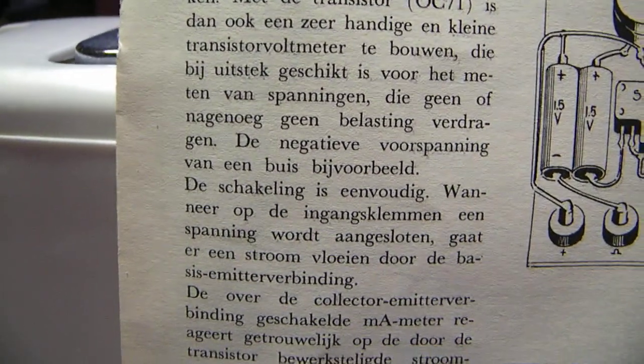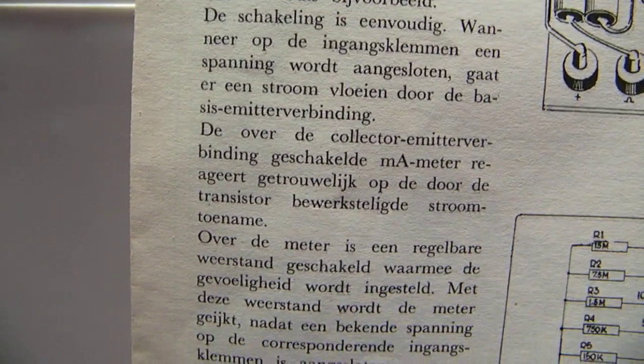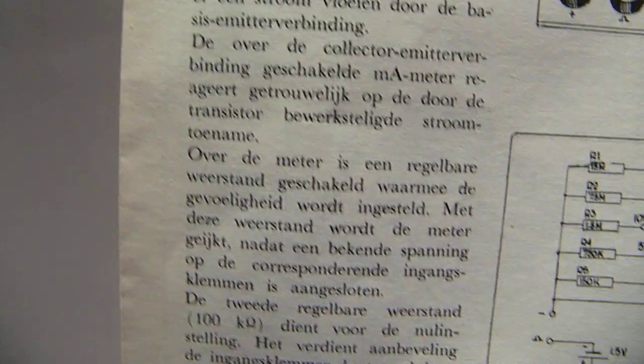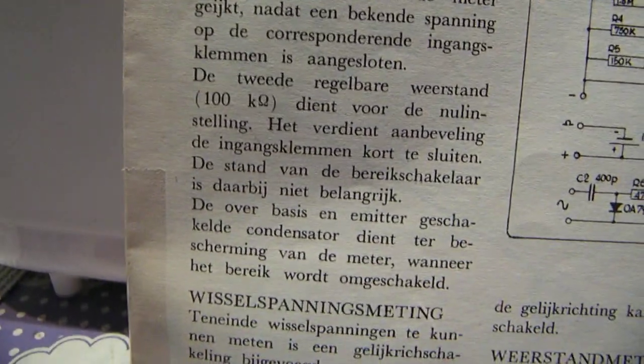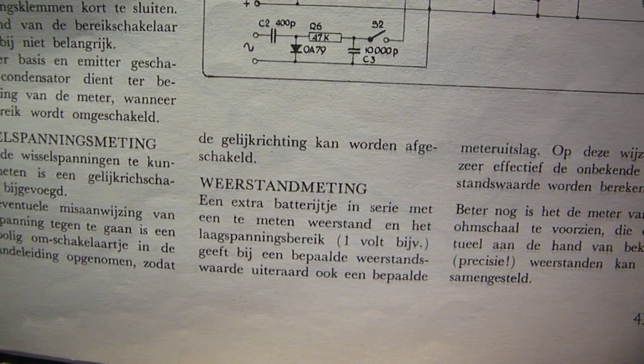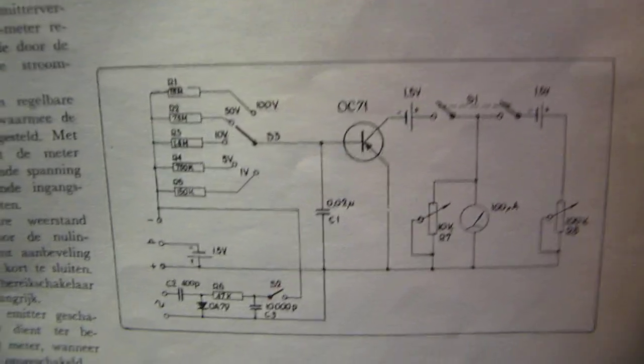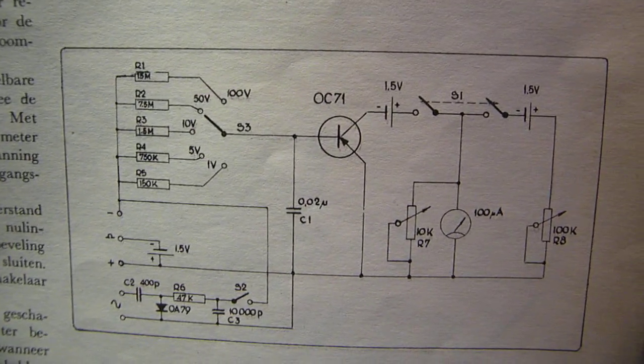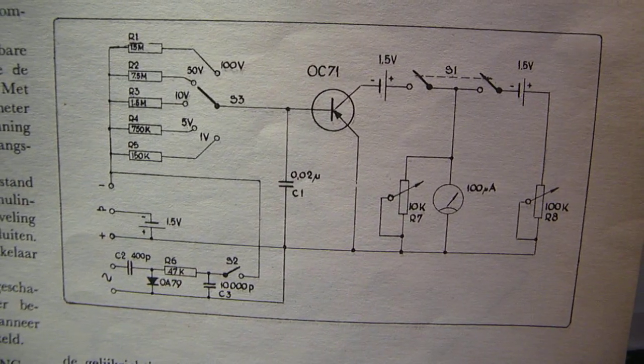The OC71 germanium transistor was a kind of a germanium transistor for all purposes. So you can also use other germanium transistors and their amplification factor must be in my opinion approximately 30 or so, perhaps 50.